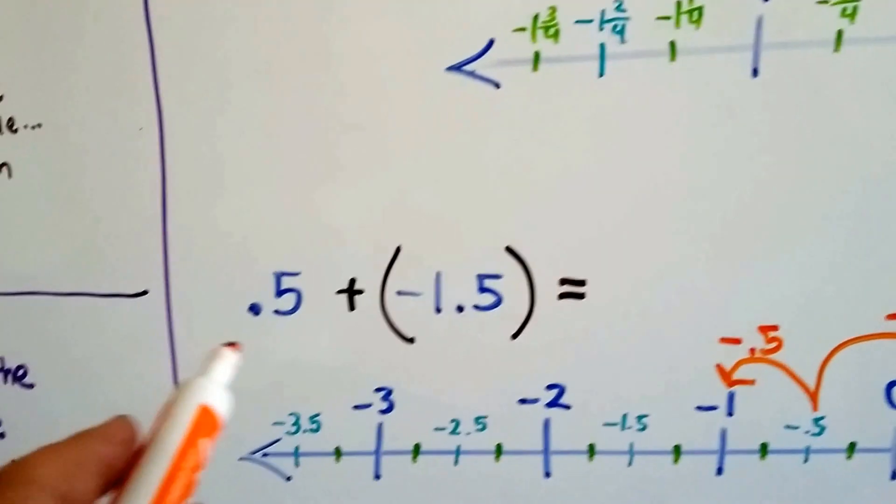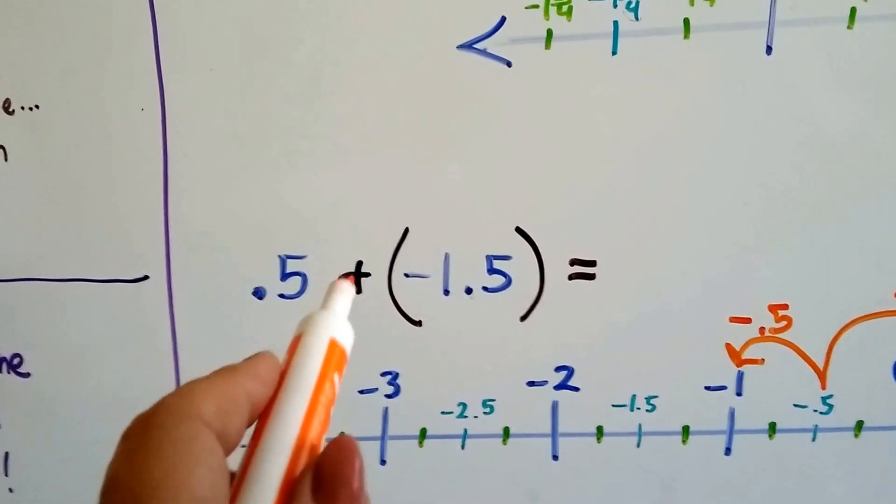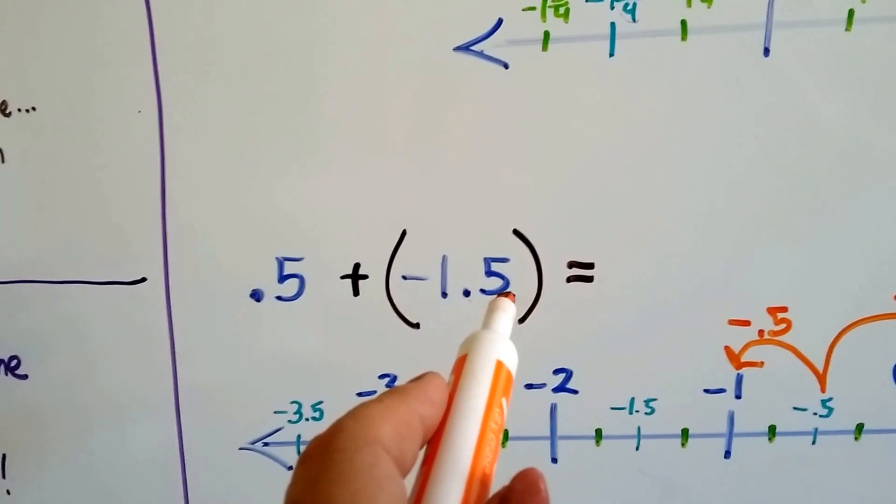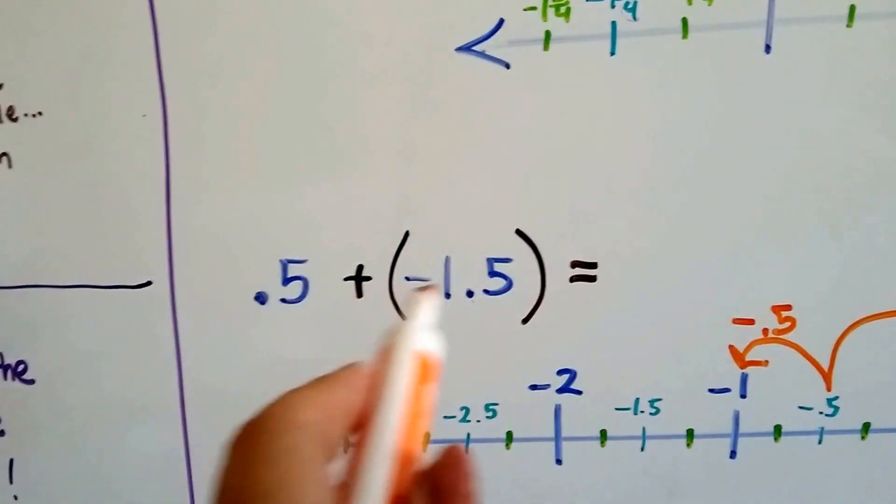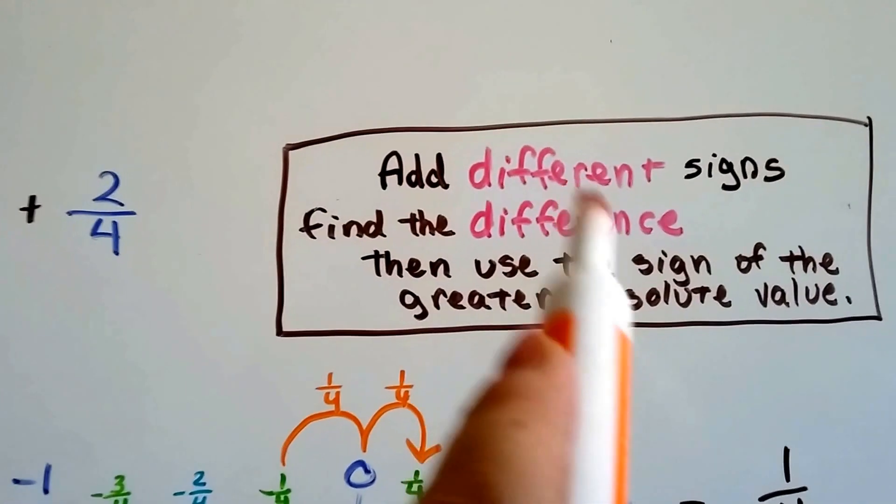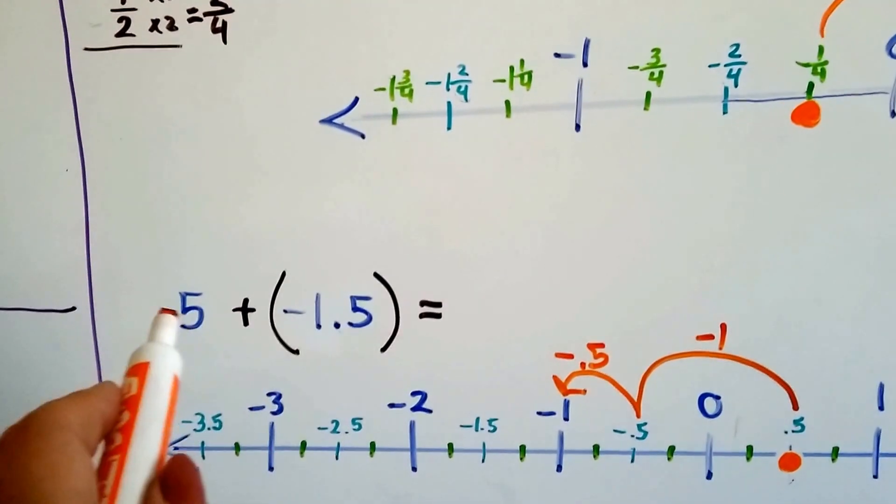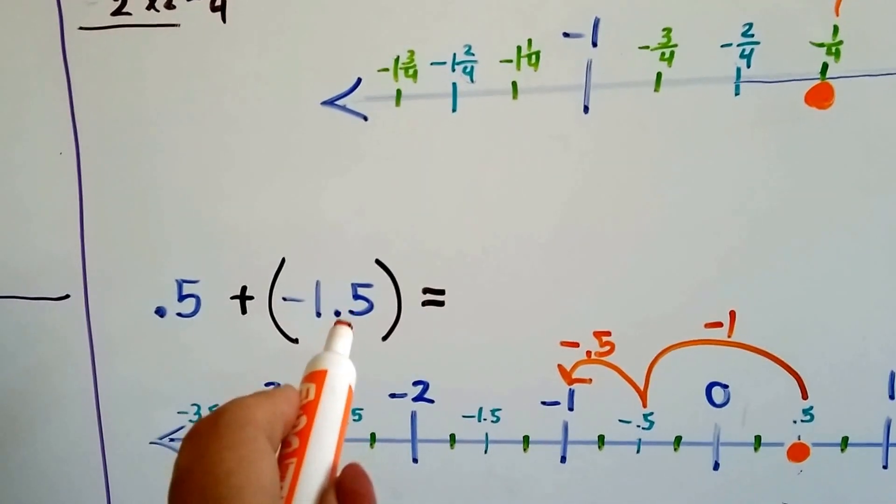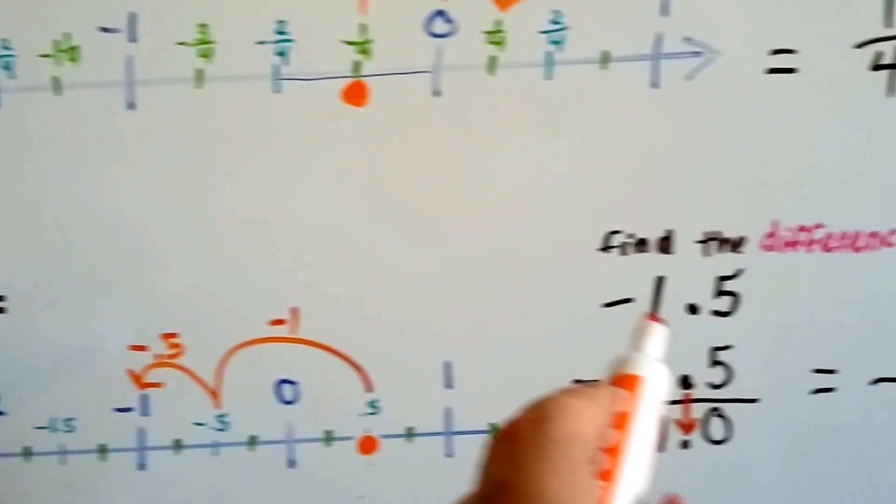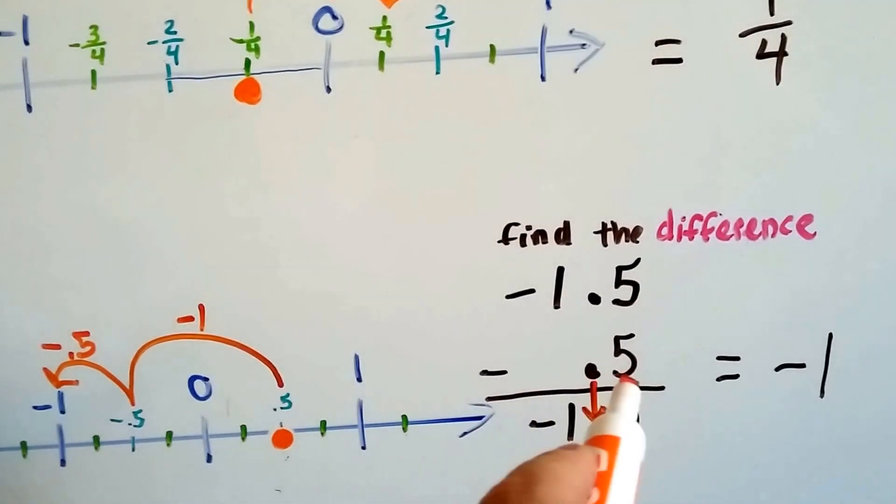Now, we've got rational numbers written in decimal form, and we've got a positive 0.5 plus a negative 1.5. So, because the signs are different, we're going to find the difference, aren't we? So, in order to find the difference, we need to subtract the smaller one from the larger absolute value, right? So, negative 1.5 minus 0.5, well,